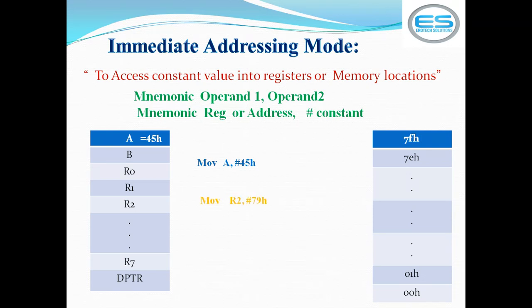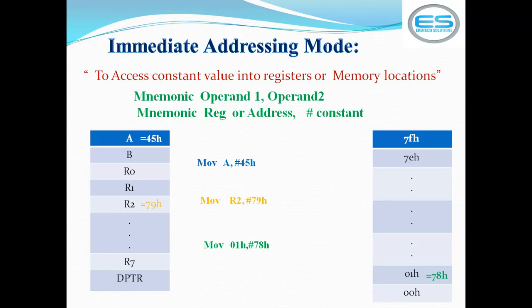The second example: MOV R2, #79H — this saves the constant value 79H into register R2. If you want to save a constant value into memory, the syntax is: MOV 01H, #78H — this saves the constant value 78H into memory address 01H. In immediate addressing mode, a constant value is always on the source side, and a constant value is always followed by the special symbol hash (#).